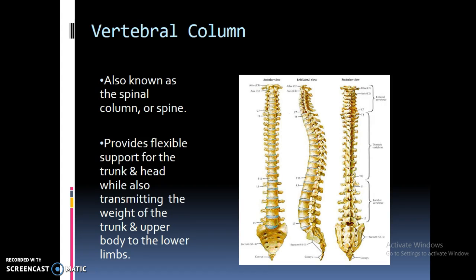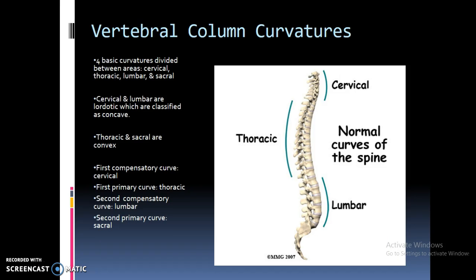The vertebral column should look about the same as what we've been going over — nothing has changed from the past couple PowerPoints. The lumbar spine is the second compensatory curve; it has that lordotic curve, similar to the cervical spine, basically just to balance out the entire spine so the weight isn't pressed on one particular area. A lot of the pressure always goes down towards the L5-S1 area, so most people will have problems in this area when they complain of lower back pain.